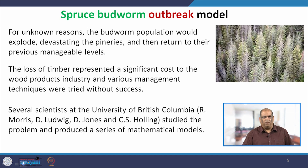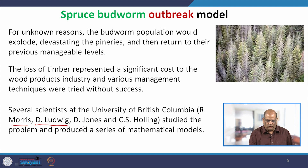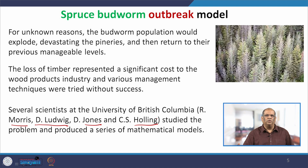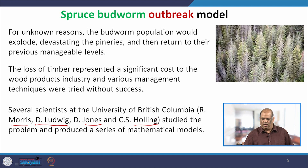This problem was studied by many mathematical modelers — several scientists at the University of British Columbia, the big names being Ludwig, Morris, Jones, and Holling. They studied this problem and produced a series of mathematical models. This is basically the background of the Spruce Budworm outbreak model. We will take one such model and show how you can make the whole model dimensionless using the process of scaling.